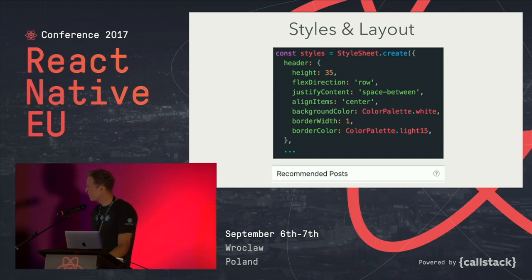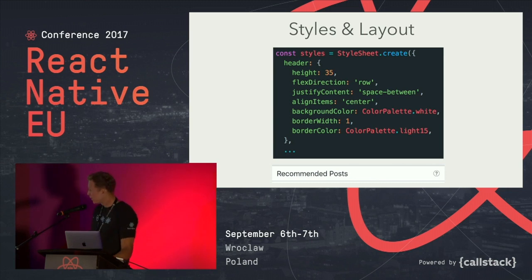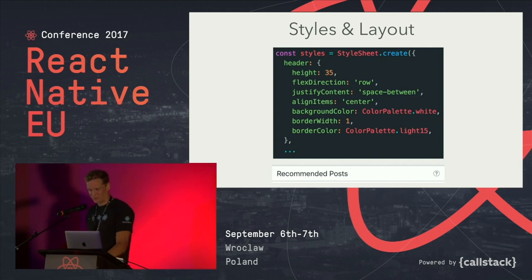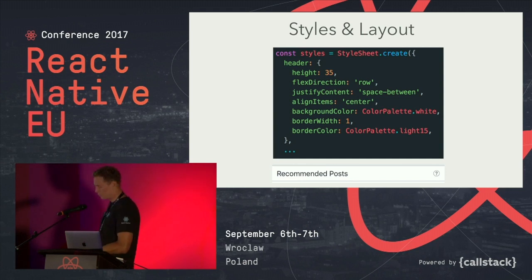Then there are styles and layout. For example, if you want a header with 'Recommended Posts' and a question mark on the right side, you just say justify-content: space-between and it's done — and it works on both platforms. That's what I like about it.